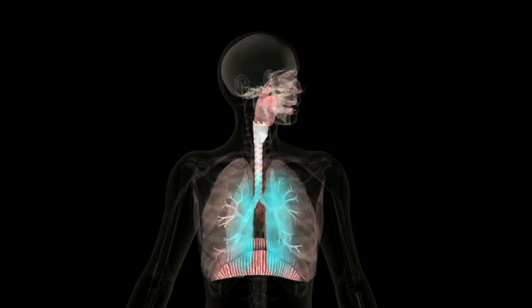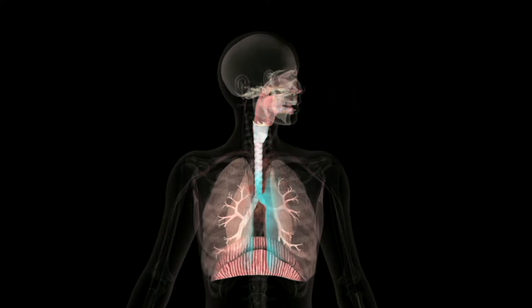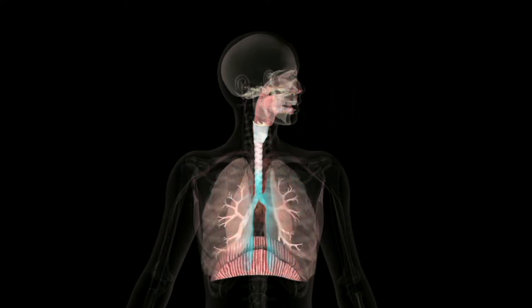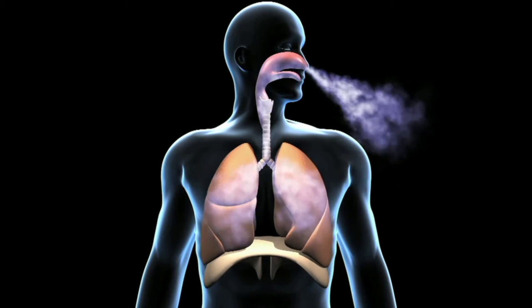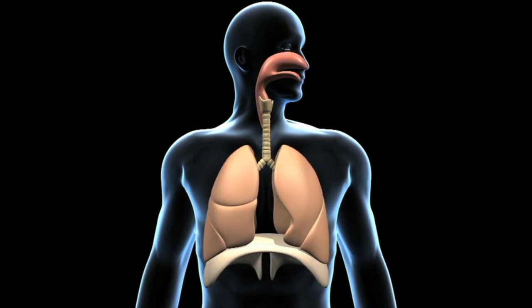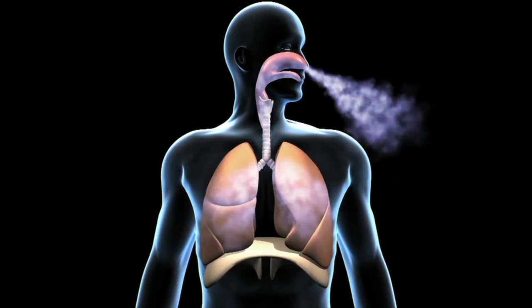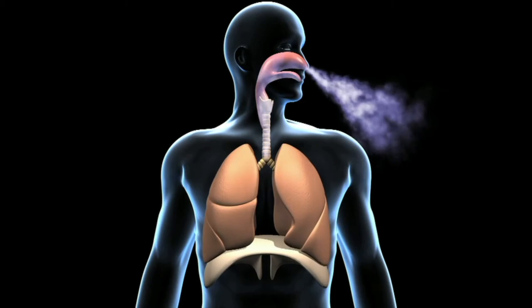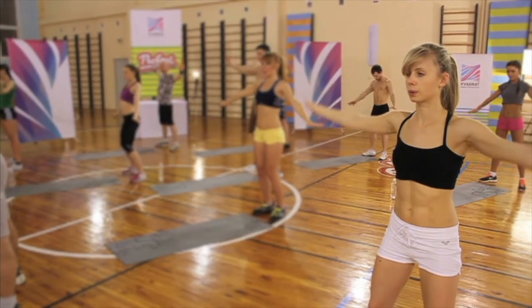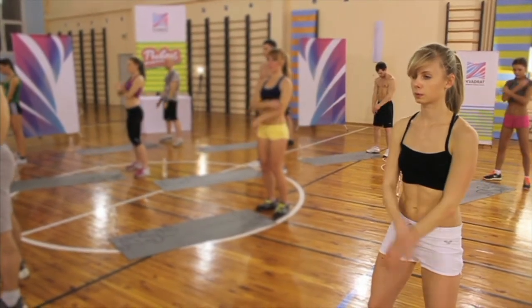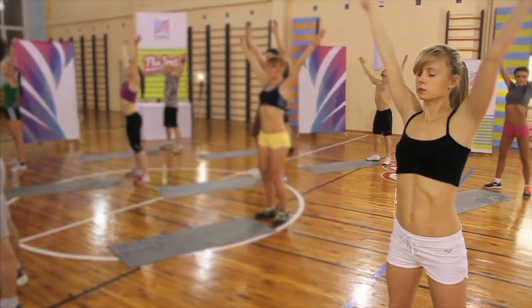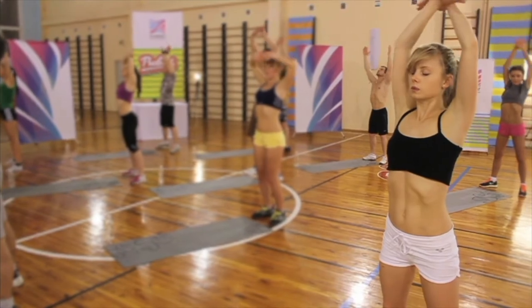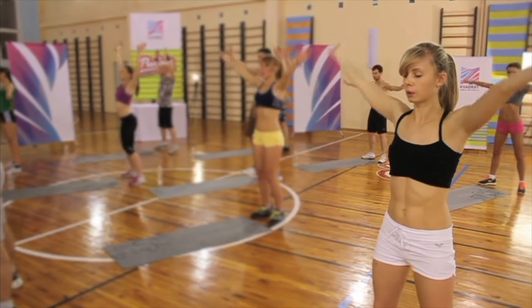The breathing muscles are controlled automatically during normal breathing from the brain stem. Forced breathing is a voluntary action controlled from the brain's motor cortex. During forced inhalation, as when taking a deep breath, the external intercostal muscles and accessory muscles aid in further expanding the thoracic cavity.